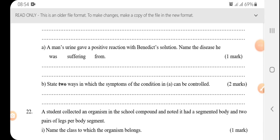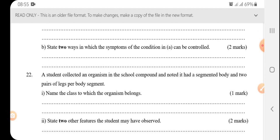A man's urine gave a positive reaction with Benedict solution. Name the disease he was suffering from. We have to remember when we talk of Benedict solution we usually use it when you are testing for sugars. So this means the man's urine has glucose present in the urine. So what is this man suffering from? We call it diabetes mellitus. State two ways in which the symptoms of the conditions can be controlled. By injecting insulin and dieting, and when you diet you have to reduce the intake of carbohydrates.